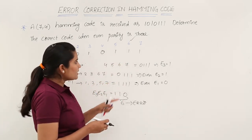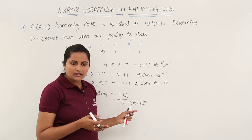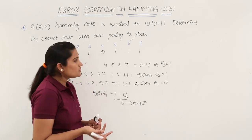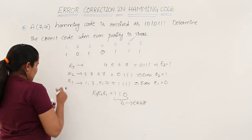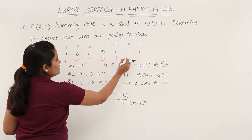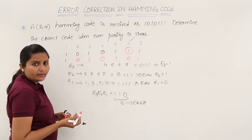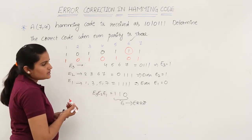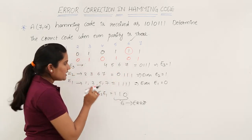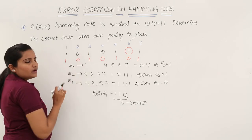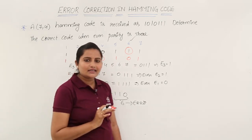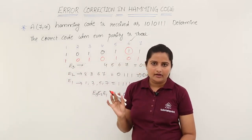The 6th bit is in error. Since the received value at position 6 is 1, and it is wrong, the correct value must be 0. So the corrected code is 1, 0, 1, 0, 1, 0, 1. We have detected and corrected the error. The correct (7,4) Hamming code at reception is 1010101.